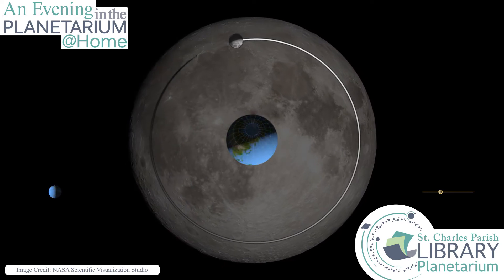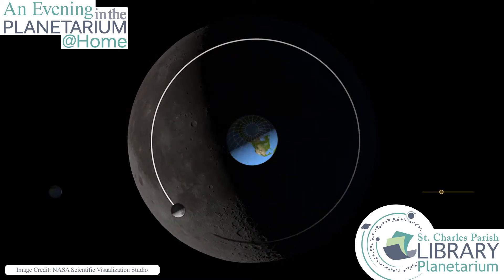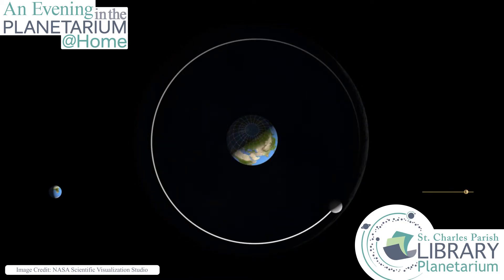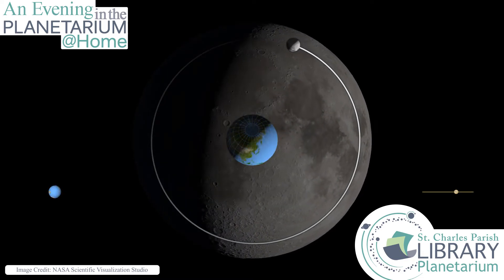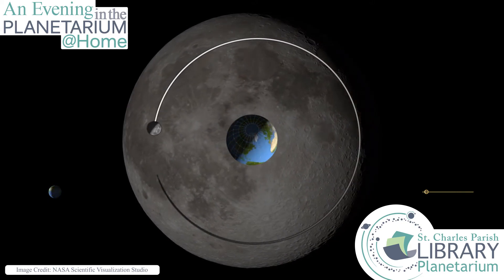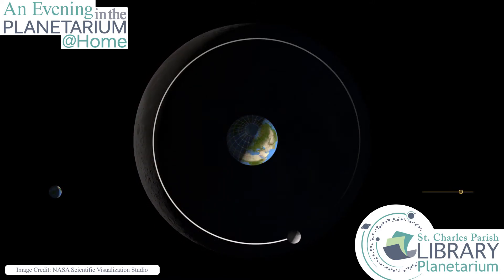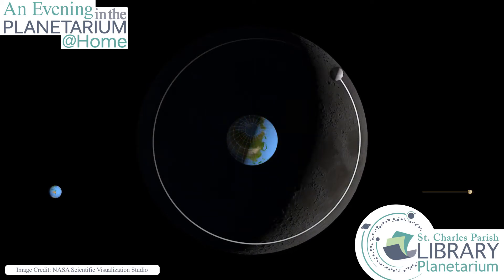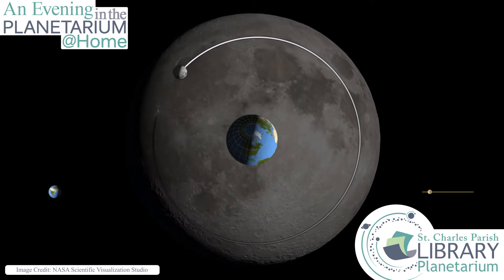Here we have three different animations put together. In the background are the phases of our moon — the different shapes, sometimes crescent, sometimes half, sometimes a full moon, and then back to where we don't see the moon at all: the new moon. In front of that we have our Earth in the center, spinning around. The Earth rotates once every day while the moon orbits around it about once every month. The moon is rotating too, but we'll save that topic for another time.